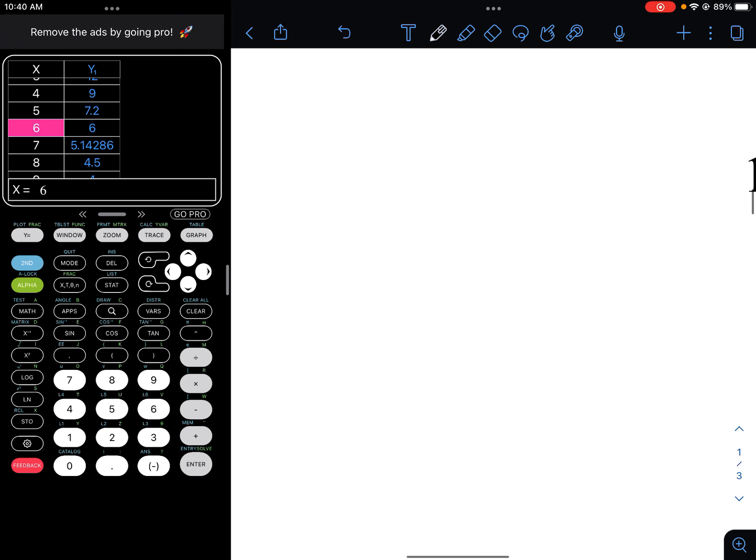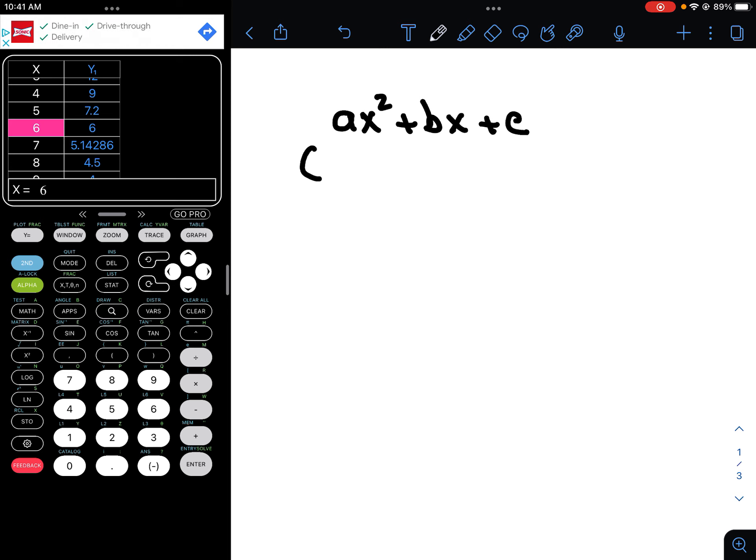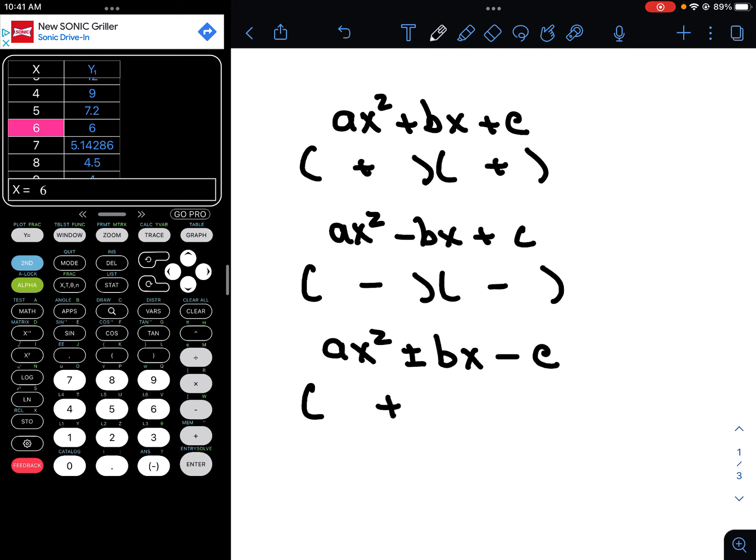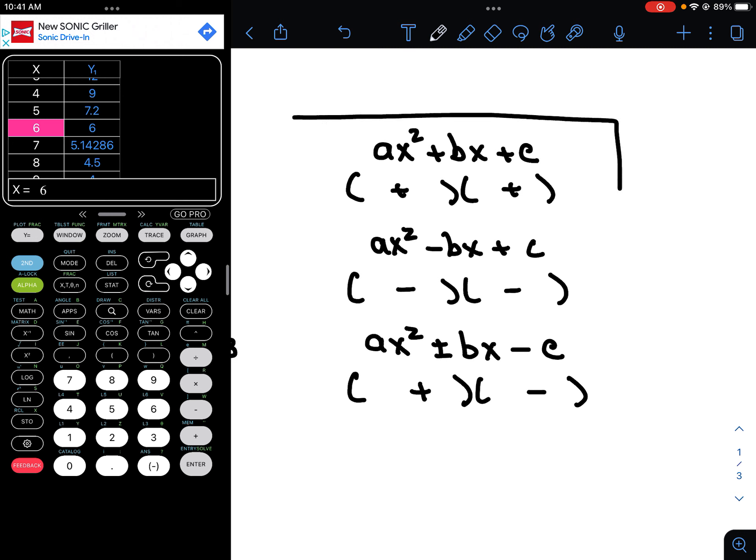Here's a little graphic to help you remember. So if you are factoring a x squared plus bx plus c, both factors are going to be positive. If you are factoring a x squared minus bx plus c, both of them will be negative. And if you are factoring a x squared, either plus or minus, but minus c, you are going to have one positive and one negative. So factoring is something that is very important that you master.